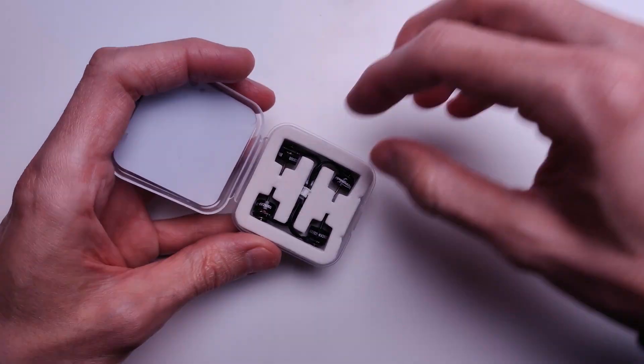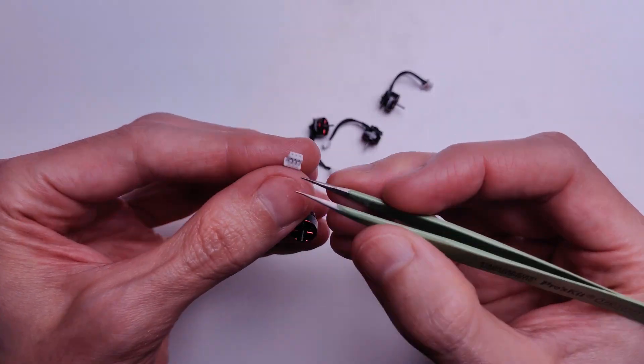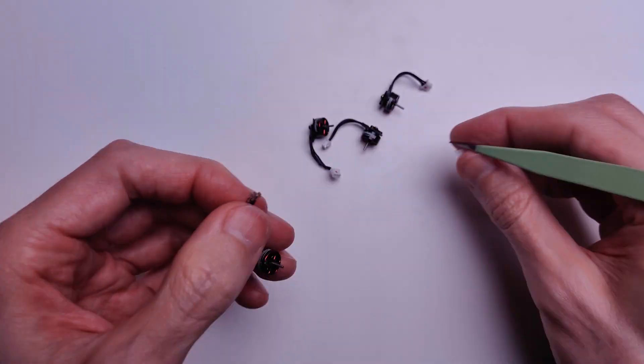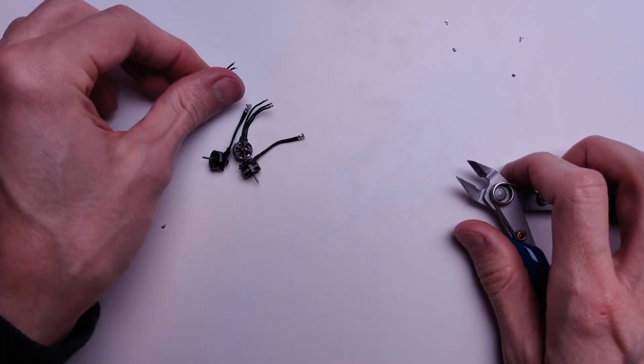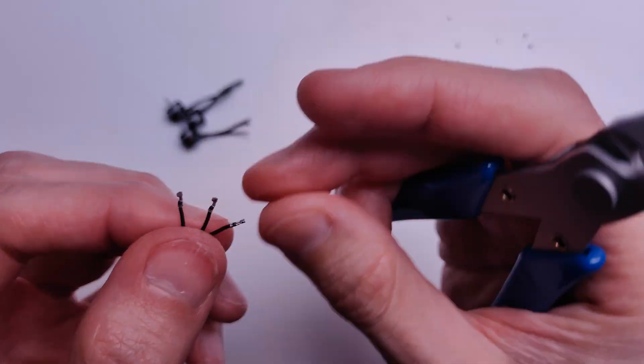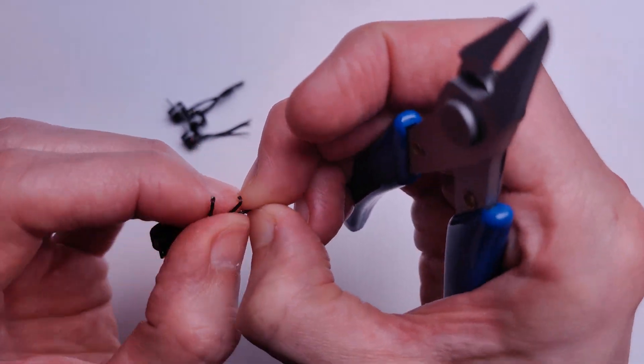Happy Models SE0702 motors, 28,000 kV. I wasn't sure about the motor wire length so I kept them as long as possible. I could have easily removed another five millimeters though.